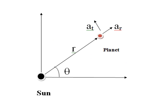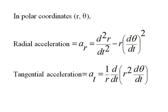In this picture you can see a planet moving around the sun. The black circle is the sun and the red circle is the planet. We consider polar coordinates in two dimensions: r and theta are the polar coordinates. Here, a_r is the radial acceleration of the planet and a_t is the tangential acceleration of the planet. We can write these accelerations in terms of r, theta, and time t as shown in this slide.